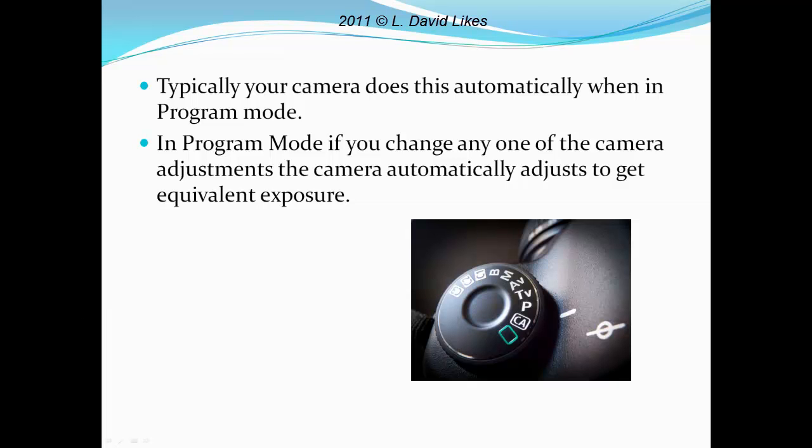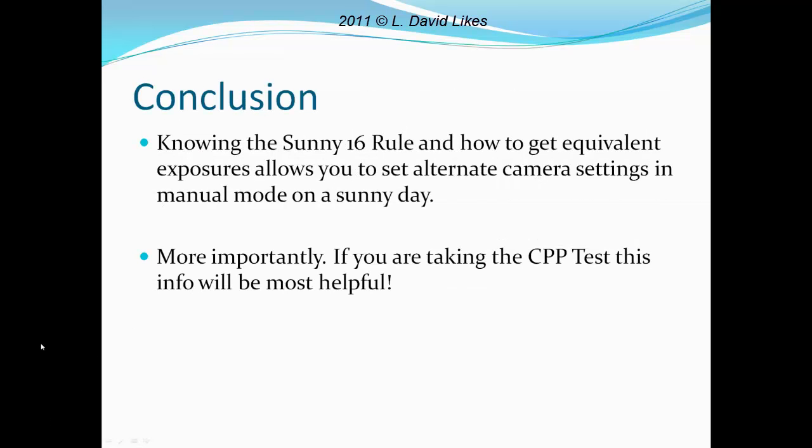Typically your camera does this automatically when you're in program mode — whether you're in P mode, TV which is shutter priority, or AV which is aperture priority. The camera automatically adjusts to get equivalent exposure. In program mode, if you change any one camera adjustment, the camera automatically adjusts the others. In conclusion, knowing the Sunny 16 rule and how to get equivalent exposures allows you to set alternate camera settings in manual mode on a sunny day. And more importantly, since we're studying for the CPP test, this info will be most helpful. I'm Dave, L. David Likes Photography. Thanks for watching.